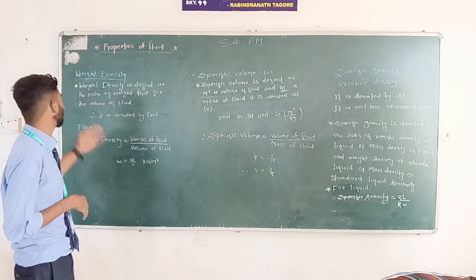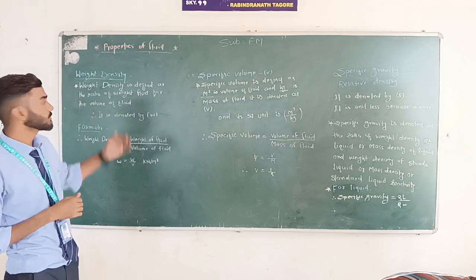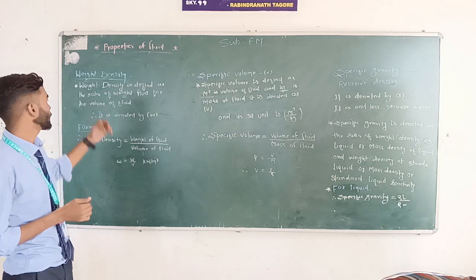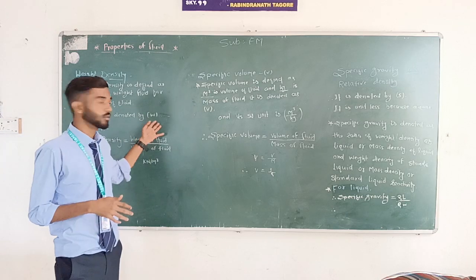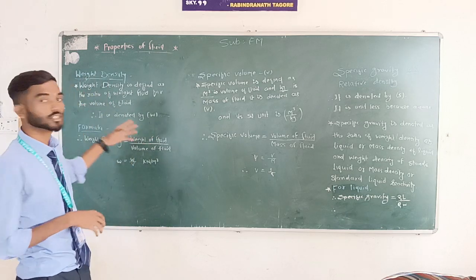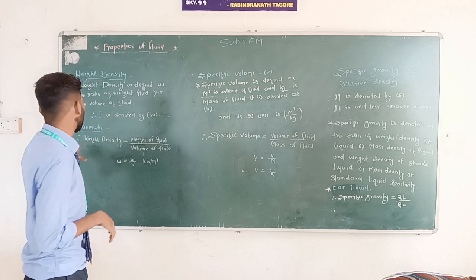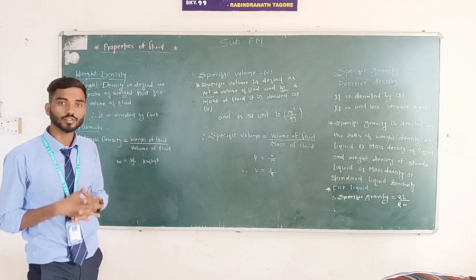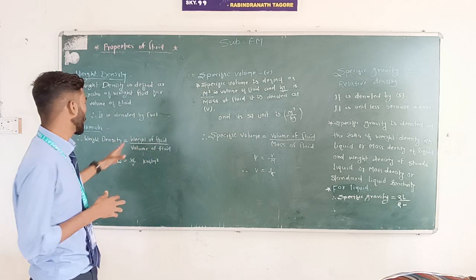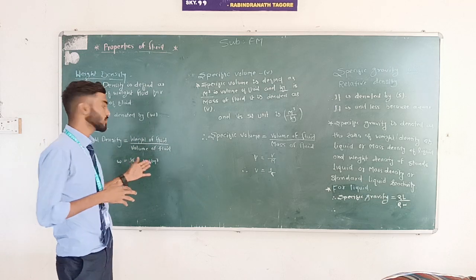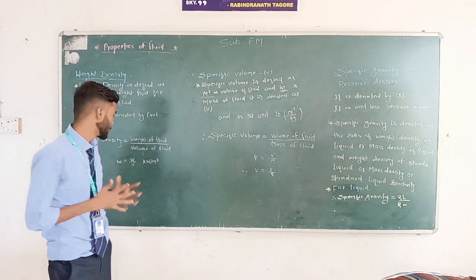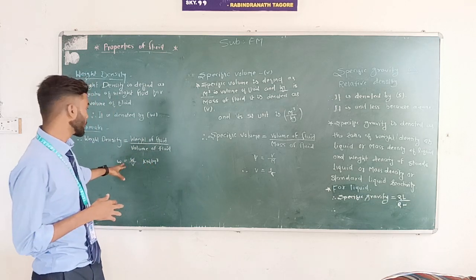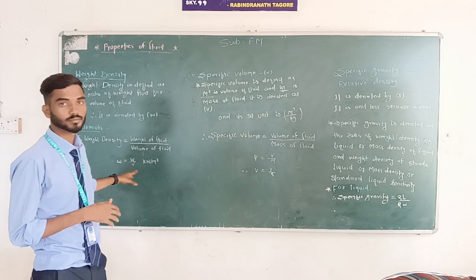Weight density is defined as the ratio of weight of fluid to the volume of fluid. It is denoted by W. Its formula is: weight density is equal to weight of fluid upon volume of fluid. The SI unit is kN per meter cube, and the formula can be written as small w is equal to W upon V.